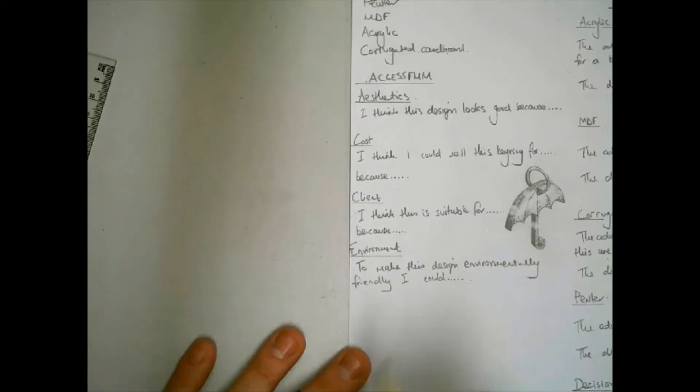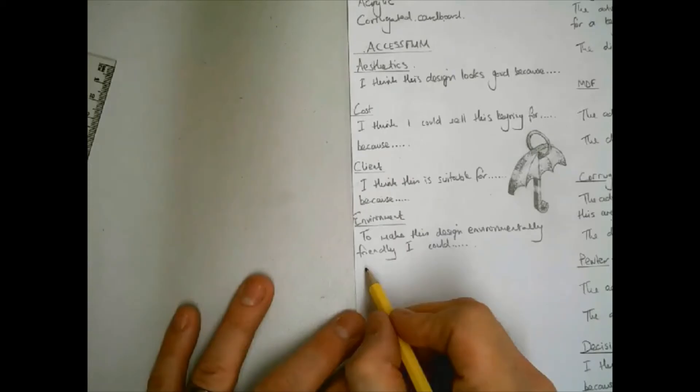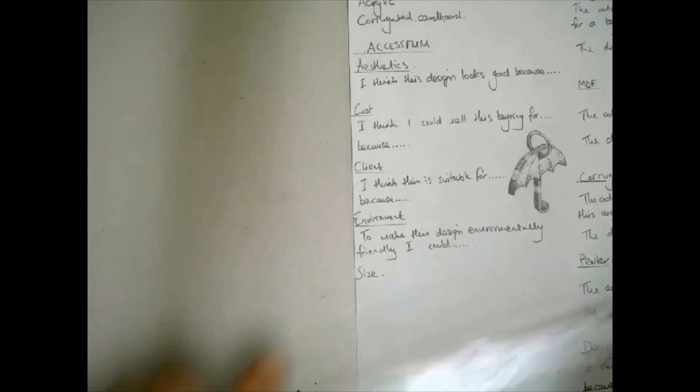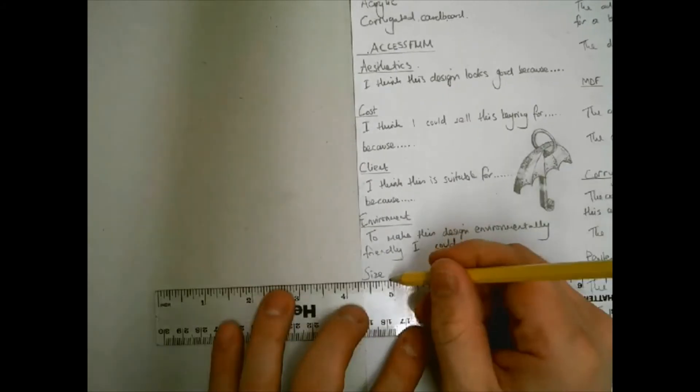The fifth letter is S. This stands for size. The things to consider at this stage are how big the product will be, why you would want to make it this size, where will the product be placed, and why knowing the place affects the size.